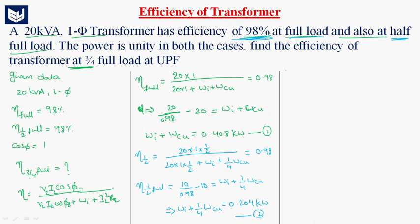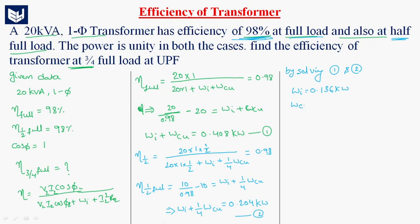Now, by solving equations 1 and 2: Wi plus WCU equals 0.408 kilowatts, and Wi plus 1 by 4 WCU equals 0.204 kilowatts. We get iron losses Wi equal to 0.136 kilowatts, and copper losses WCU equal to 0.272 kilowatts.